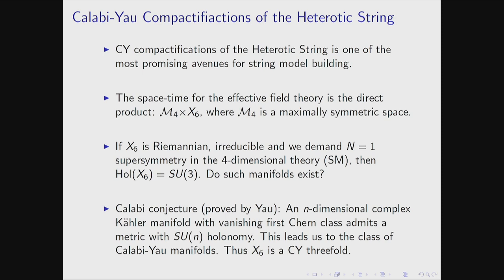Here is a quick overview of Calabi-Yau compactifications of the heterotic string — one of the most promising approaches for string model building. The starting point is that spacetime is factorized as a four-dimensional spacetime times a six-dimensional internal space. If you assume the four-dimensional space is maximally symmetric, and that the internal space is Riemannian, and you further demand an irreducible manifold — since reducible compactification spaces are difficult to reconcile with chiral fermions — and if you demand N=1 supersymmetry in the 4D theory, then owing to Berger's classification of manifolds from the 1960s, the holonomy of the internal space is determined to be SU(3).